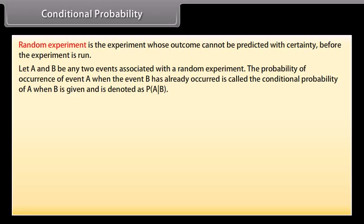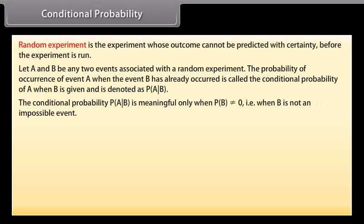This is denoted as P(A|B). The conditional probability of event A given event B is meaningful only when the probability of event B is not equal to zero — that is, when B is not an impossible event.